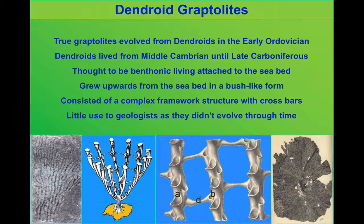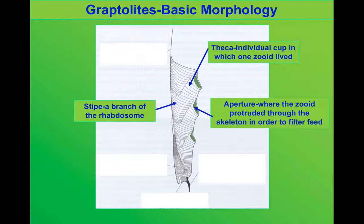These particular ones aren't really a great deal of use to us. They appeared in the Cambrian, became extinct at the end of the Carboniferous, and didn't really evolve throughout all that time. The rest of the Graptolites, though, did.